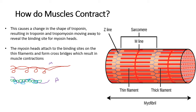When an impulse reaches the neuromuscular junction, the muscle membrane becomes depolarized and calcium-gated channels open. Calcium ions flow into the sarcoplasm and bind to troponin, causing a change in its shape. Troponin then moves out of the way, pulling tropomyosin with it, which reveals the binding sites on actin for myosin heads. Myosin then binds to actin, forming a crossbridge.